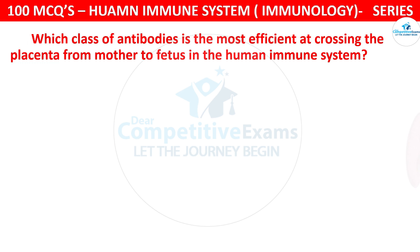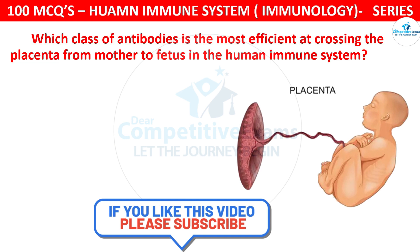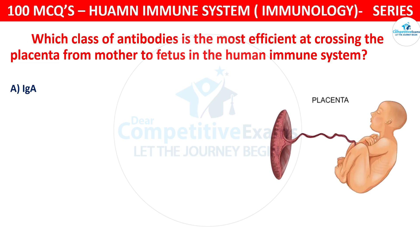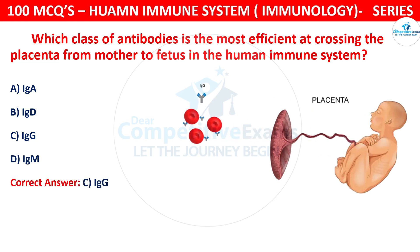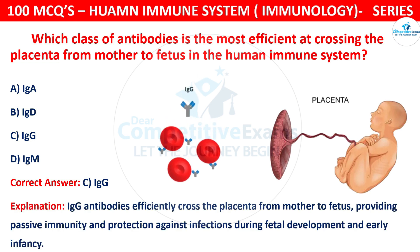Which class of antibodies is the most efficient at crossing the placenta from mother to fetus in the human immune system? The options are IgA, IgD, IgG, or IgM. The correct answer is C, that is IgG. IgG antibodies efficiently cross the placenta from mother to fetus, providing passive immunity and protection against infections during fetal development and early infancy.